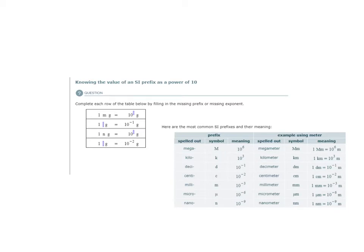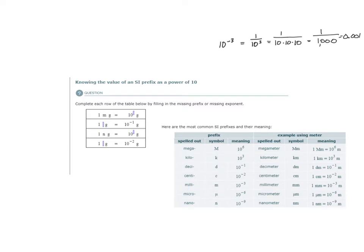Let's investigate what that means. We have 10 to the power of minus 3. I can write this as a fraction: 1 over 10 to the 3. What is 10 to the third power? It equals 1 over 10 times 10 times 10, which is 1,000. So 10 to the minus 3 is 1 divided by 1,000, or as a decimal 0.001. This tells us that a milligram is 1/1,000th the mass of a gram — 1,000 times smaller than a gram.